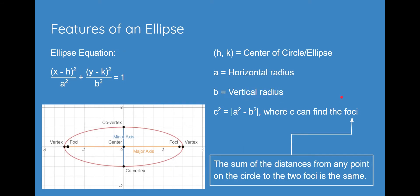The features of an ellipse, we'll be still finding the center, which is still the same as the standard equation for a circle. It is h, k. And for the new terms, we have a and b, and a represents the horizontal radius, and b represents the vertical radius. And you also have this equation, c squared equals absolute value of a squared minus b squared, where c can help find the foci.